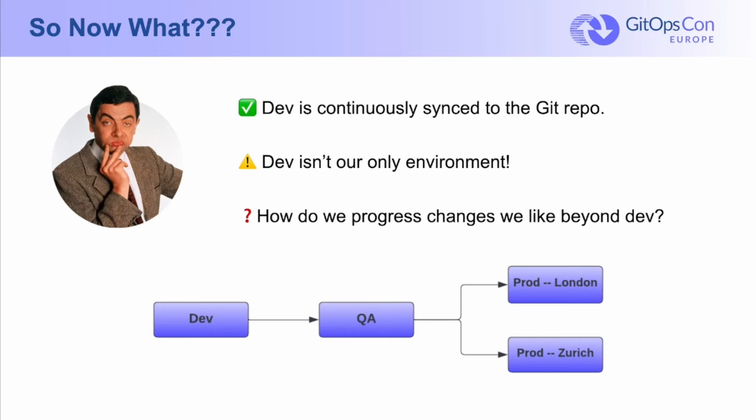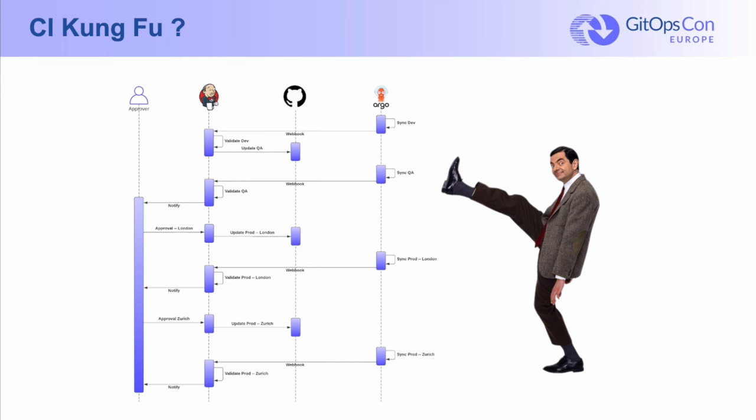This is where GitOps practitioners start to get creative. The implementation details tend to vary, but broadly speaking, there's a common pattern that we observe people using to solve this problem. We call this CI Kung Fu. Starting from the top, we see Argo CD has just synced the dev instance of our application. We got clever and used a post-sync hook to signal our CI system — Jenkins in this case — to execute some automated verification process so that we can assert that the application is working as expected.